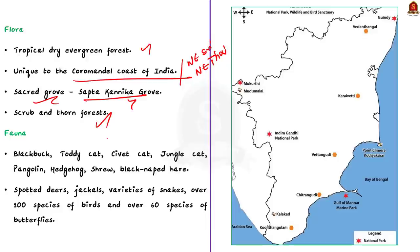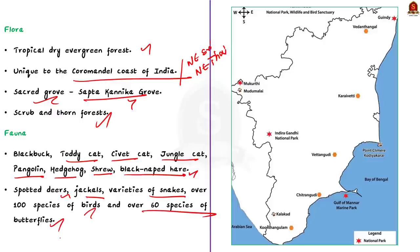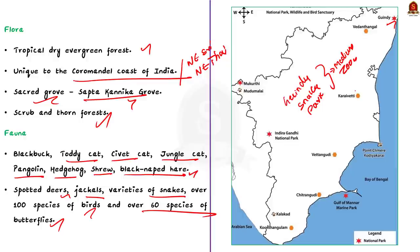The fauna of Guindy National Park includes black buck, toddy cat, civet cat, jungle cat, pangolin, hedgehog, shrew and black-naped hare. It also has a significant population of spotted deer, jackals, a variety of snakes, over 100 species of birds and more than 60 species of butterflies. The park plays a role in both ex-situ and in-situ conservation of wild animals. The Guindy Snake Park, adjacent to the national park, gained statutory recognition as a medium-sized zoo from the Central Zoo Authority in 1995. Tamil Nadu has five national parks: Guindy, Mudumalai, Mukurti, Indira Gandhi (Anamalai) and Gulf of Mannar Marine National Park.